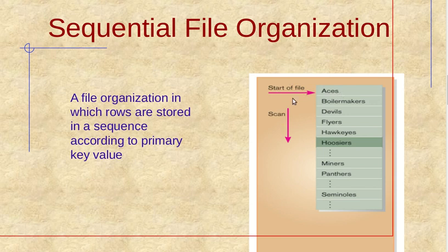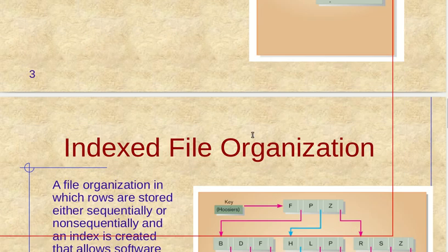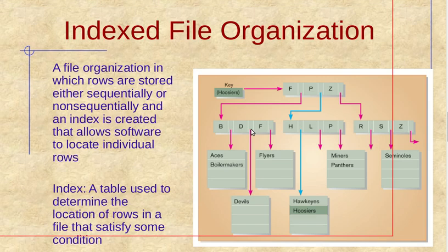Here is a figure — you can see the start of the file and we scan in this direction. To find a specific record, for example 'Miners,' we go through 'Boilermakers,' then 'Devils,' scanning all records until we reach 'Miners.' Next is index file organization.